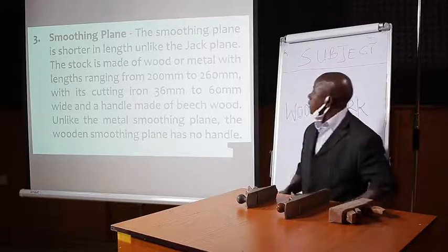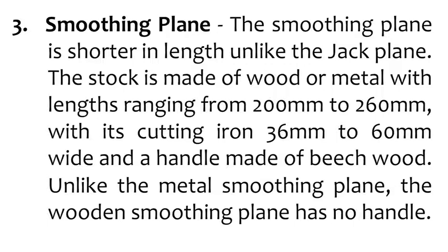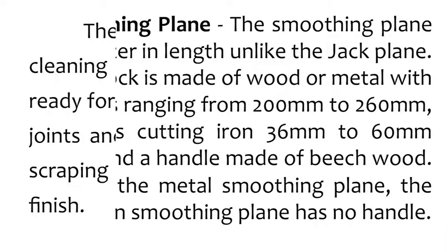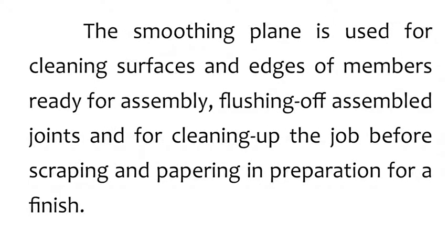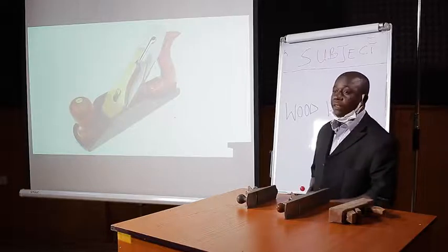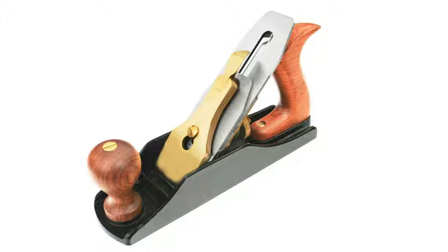Number three, the smoothing plane. The smoothing plane is shorter in length, unlike the jack plane. The stock is made of wood or metal with length ranging from 200 millimeters to 260 millimeters, with its cutting iron having a width of 36 millimeters and a handle made of wood. Unlike the metal smoothing plane, the wooden smoothing plane has no handle. The smoothing plane is used for cleaning surfaces and edges of members ready for assembling, flushing off assembled joints, and cleaning up the job before scraping or sandpapering for final finishing.